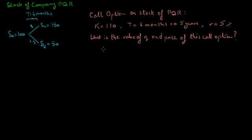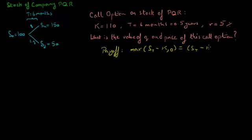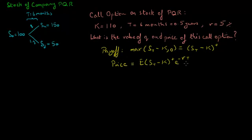The payoff of a call option is the maximum of the terminal stock price — the stock price at maturity of the option — minus the strike price, or 0. This is also often written as the terminal stock price minus the strike price with a superscript plus. The price of this option equals the expected payoff discounted at the risk-free rate over time period T.